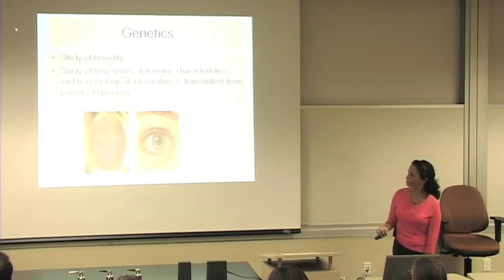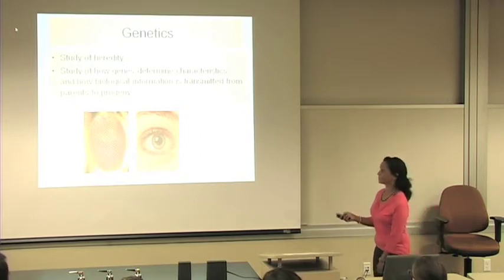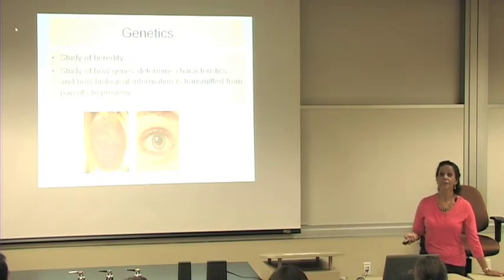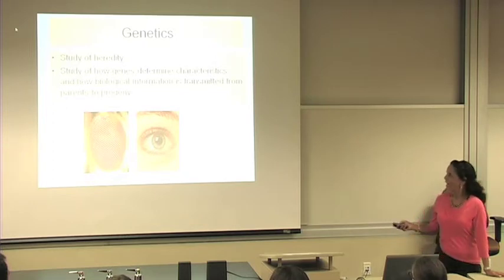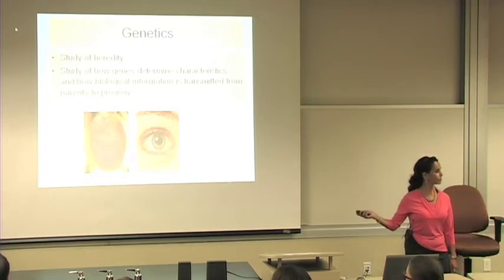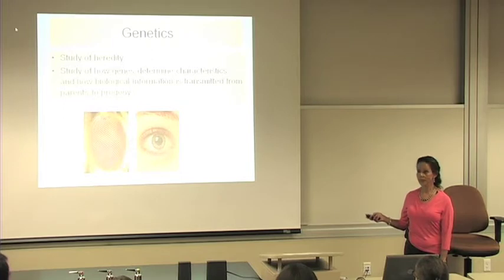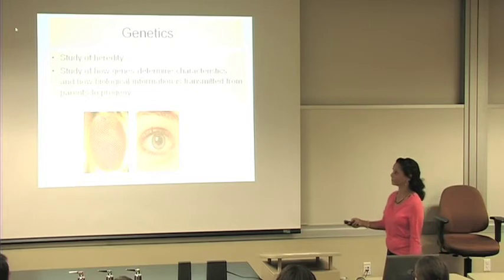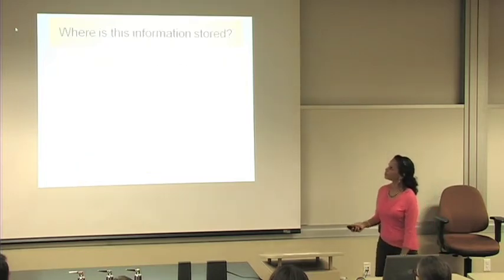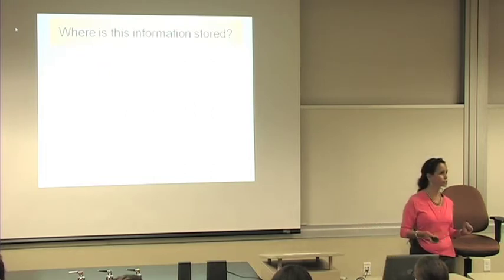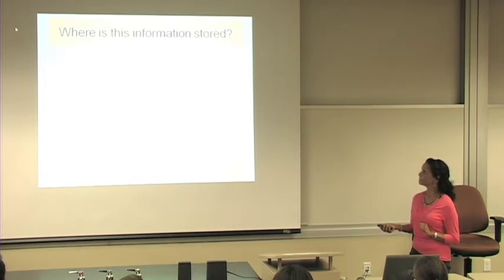What you're seeing here are two different eyes. This, of course, the eye of a human, but this is the eye of a fruit fly. Very good. And they are both considered eyes and yet how different they are. And that's because the genes in the human are different from the genes that determine the eye, the form and the color of the eyes in fruit flies.